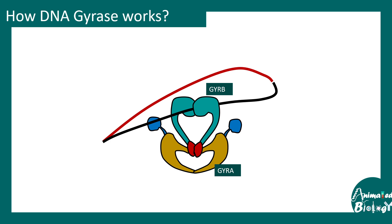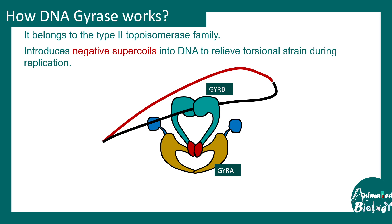To understand how fluoroquinolones work, we need to understand the mechanism of DNA gyrase action. DNA gyrase has two major subunits: gyr-B and gyr-A. It belongs to the topoisomerase 2 family, meaning it can introduce double stranded DNA breaks. It also introduces negative supercoils which relieve torsional strain during replication, making it essential for processes like replication and transcription.